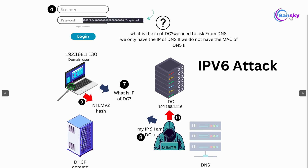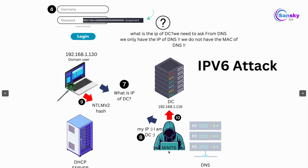The attacker responds that it knows the DC's IP address and gives its own IP instead. The system then mistakenly sends the NTLMv2 hash to the attacker. The attacker relays that NTLMv2 hash to the DC. Because this hash belongs to an administrator, the attacker can successfully create a user on the DC. That is the whole scenario behind the IPv6 attack using mitm6 and ntlmrelayx.